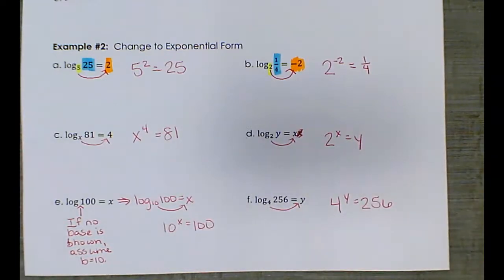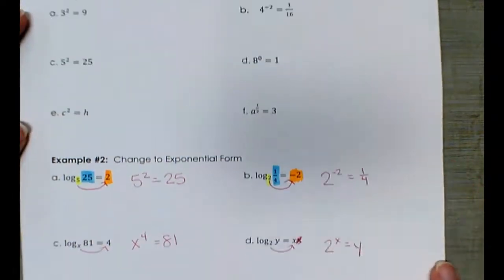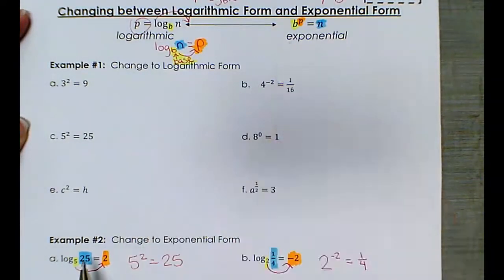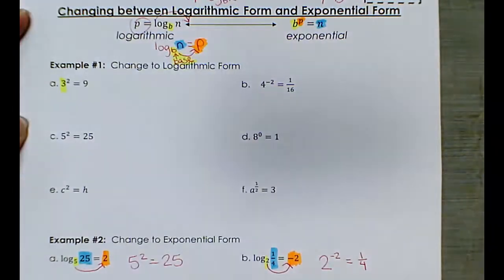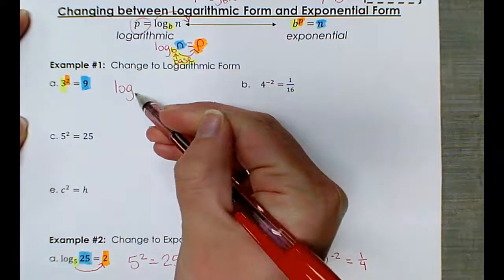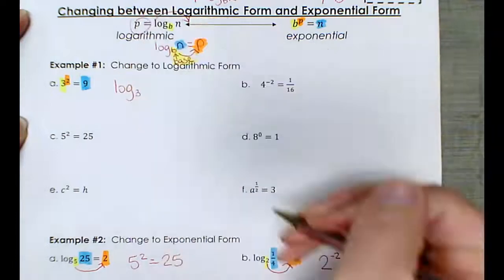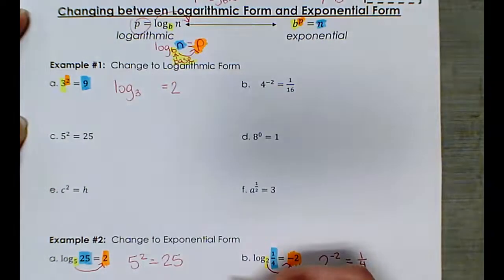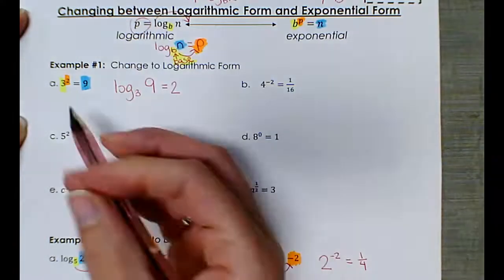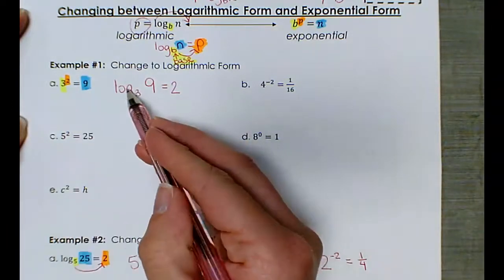Now that we understand how to go from logarithmic form to exponential form, let's go the other way. In example 1, we're changing to logarithmic form. These problems are in exponential form — a base to an exponent equals a number. Here's our base, here's the power, and here's the number. When I rewrite this, I have log with base 3 as a subscript, the number 9 goes here, and it equals the exponent 2. So 3 to the power of 2 equals 9 becomes log base 3 of 9 equals 2.